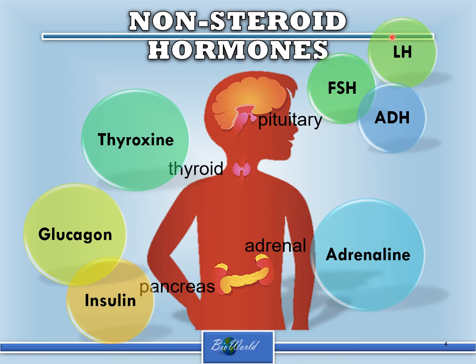However, FSH and LH are related to reproduction. Do not make the careless mistake of thinking that steroid hormones are involved in reproduction, and therefore FSH and LH should also be steroid hormones. The steroid hormones are the hormones secreted by the testis and the ovary. FSH and LH, although related to reproduction, are synthesized by the pituitary gland — that's why FSH and LH are non-steroid hormones.